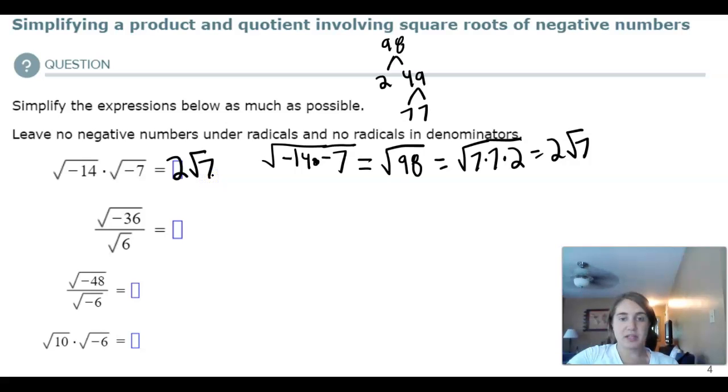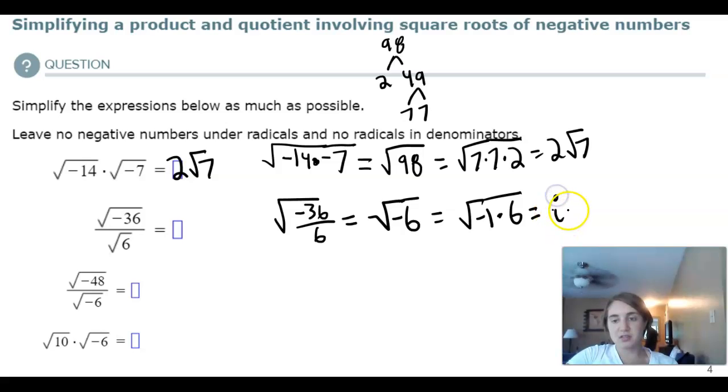We know that this is the same as negative 36 divided by 6, which equals square root of negative 6. 6 does not simplify any further, but we can do negative 1 times 6. So, i square root 6.